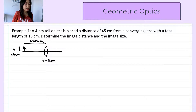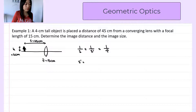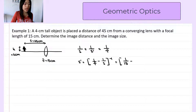To find the image distance, we use the thin lens equation: 1 over the object distance plus 1 over the image distance s prime equals 1 over f. So s prime equals the inverse of (1/f minus 1/s). Plugging in the numbers: f is positive 15 cm and s is positive 45 cm. We get s prime equals 22.5 cm, and it is positive.